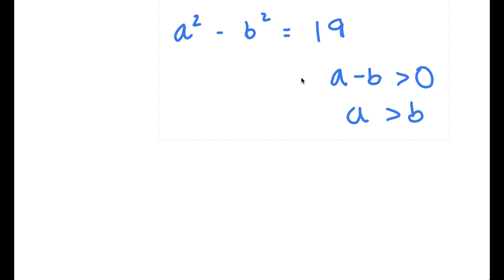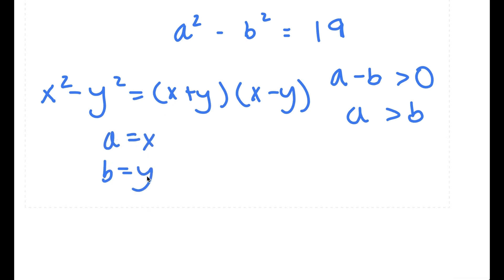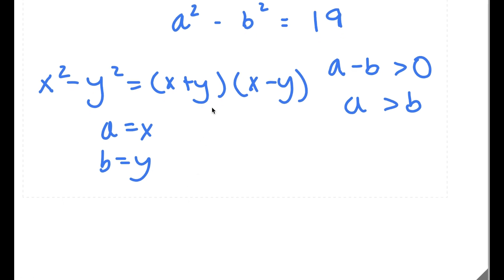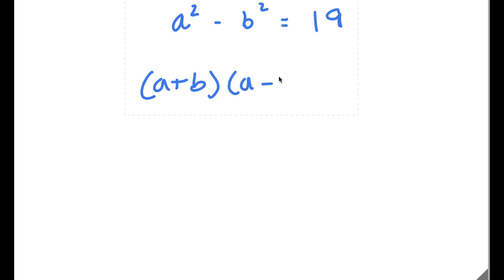Now, if I have something in the form x squared minus y squared, this is simply equal to x plus y times x minus y. In this case, we can think of a as x and b as y, so this would be equal to a plus b times a minus b, which is equal to 19.